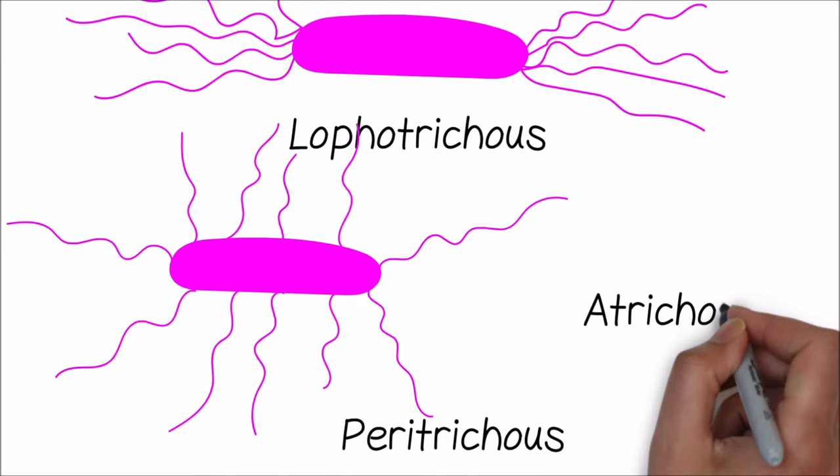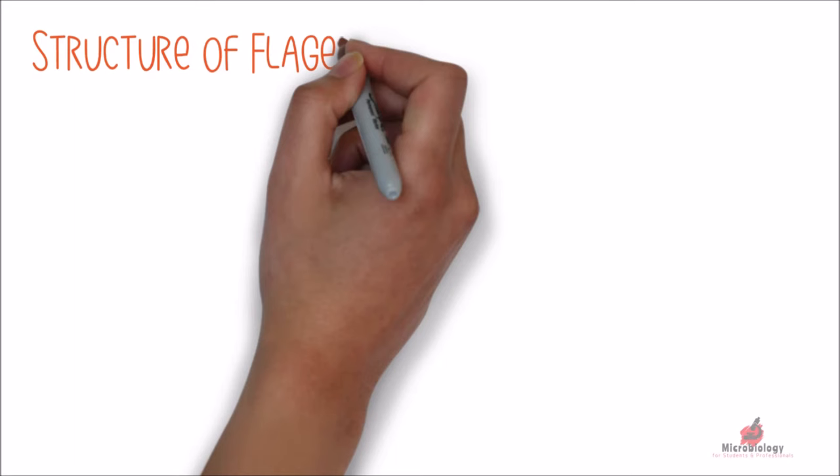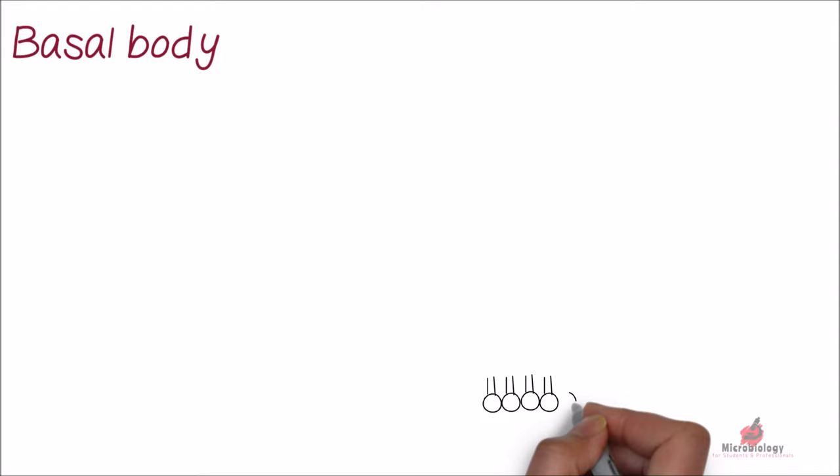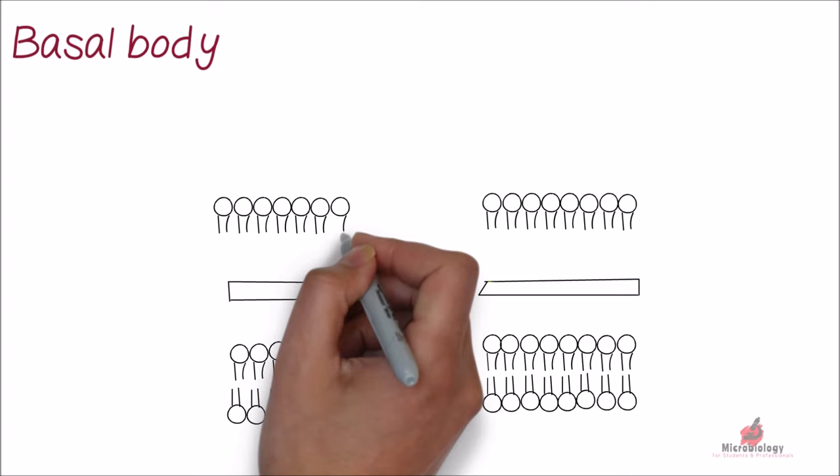Flagella has got three basic parts: basal body, hook, and filament. Basal body is structurally complex part of the flagellum, and it is the only part of the flagellum that is inside the cell wall.